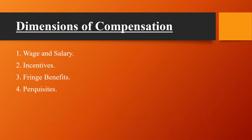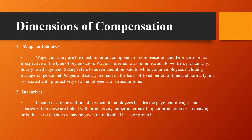Now the dimensions of compensation — there are four dimensions: wages and salary, incentives, fringe benefits, and perquisites. We will check them one by one. The first dimension is wages and salary. Before discussing it, we need to know the difference between wage and salary. A wage is given on a day-to-day or weekly basis.